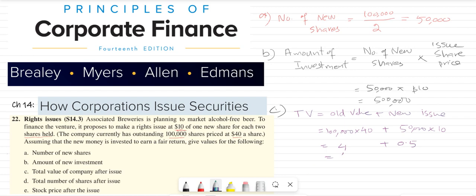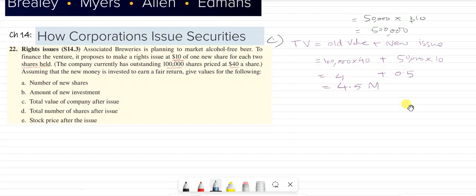Then part D: Total number of shares after the issue. So total shares will be old shares plus new shares. Old shares are 100,000 and new shares are 50,000, so in total there are 150,000 shares.